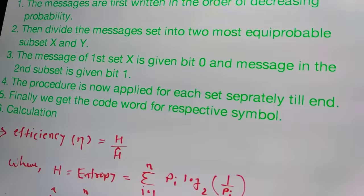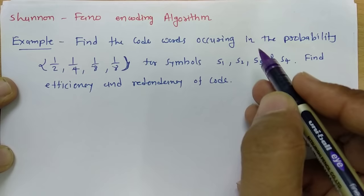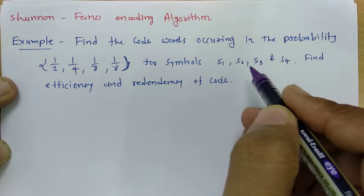Let us begin with the solution of this example. The question is: find the codeword for symbols S1, S2, S3, S4 occurring with probabilities 1/2, 1/4, 1/8, and 1/8 respectively. Also find the efficiency and redundancy of the code.